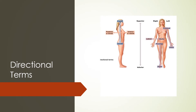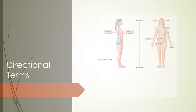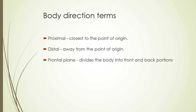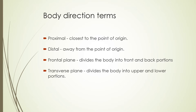This is just a picture of some of those directional terms. More body direction terms would be 'proximal,' which is closest to the point of origin — so closest to the shoulder, proximal to the shoulder. 'Distal' would be away from the point of origin, so distal to the shoulder would be like a finger. The frontal plane divides the body into front and back portions. The transverse plane divides the body into upper and lower portions. And the median plane divides the body into left and right.